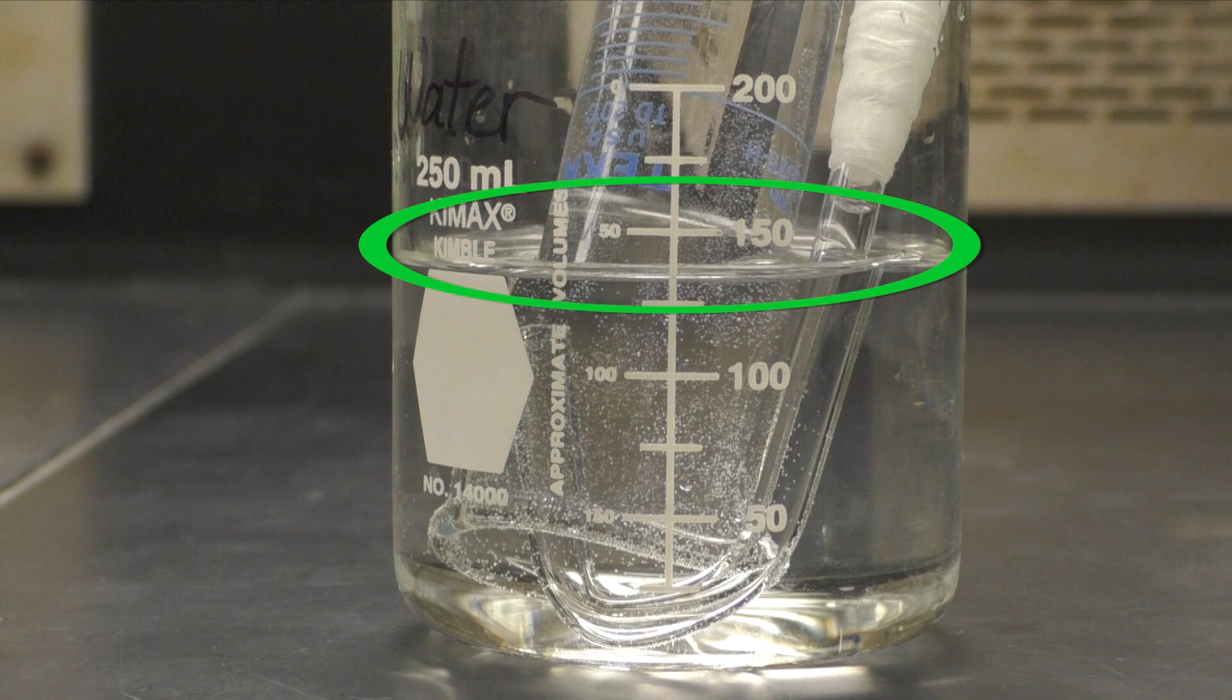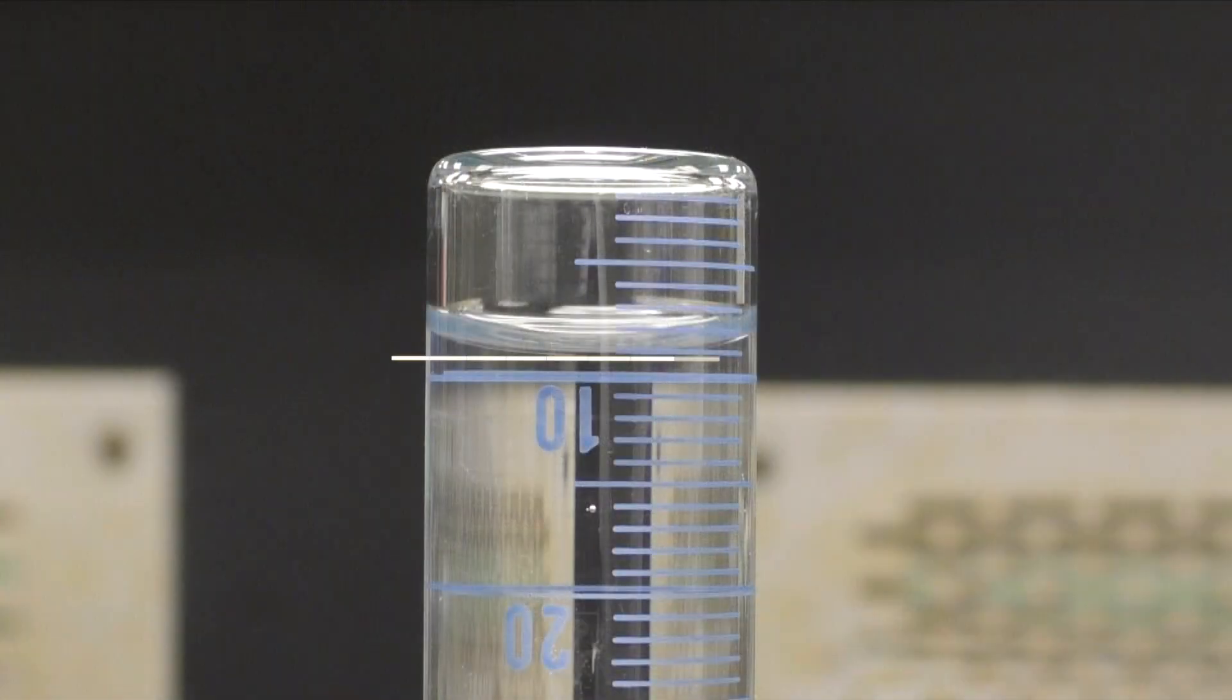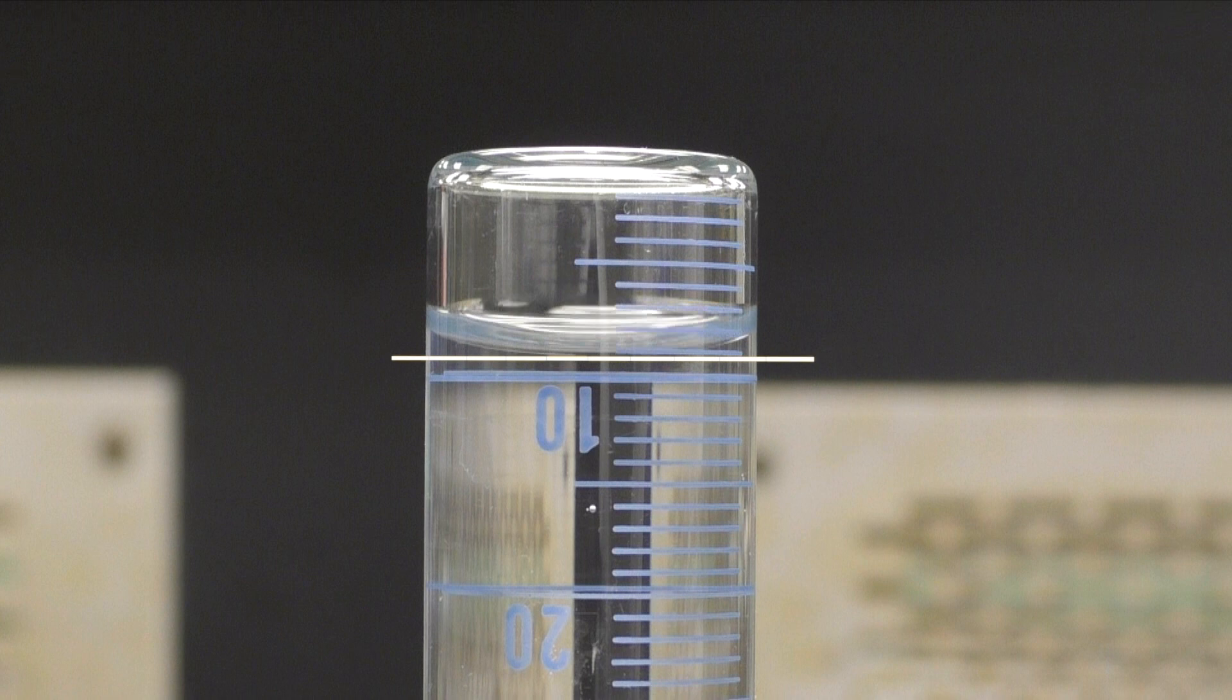Once the water in the beaker has been drained to the proper level, take an initial volume reading in the graduated cylinder. Remember, you are measuring the volume of gas in the cylinder, not water. So in my example, I have about 9ml of air to start with.